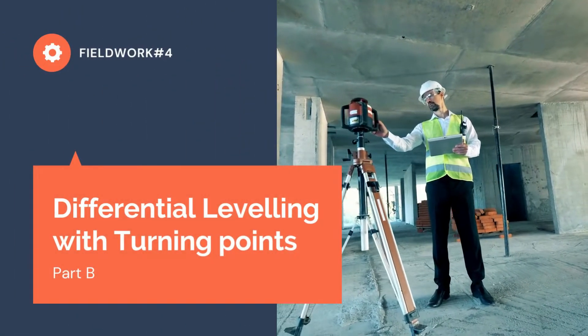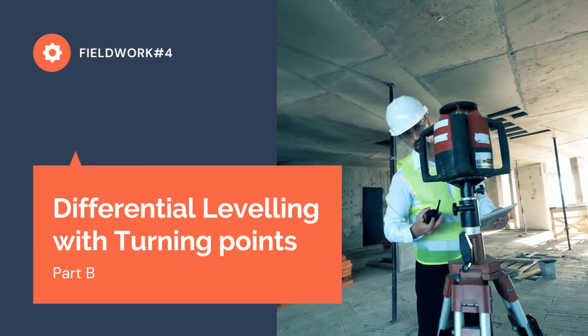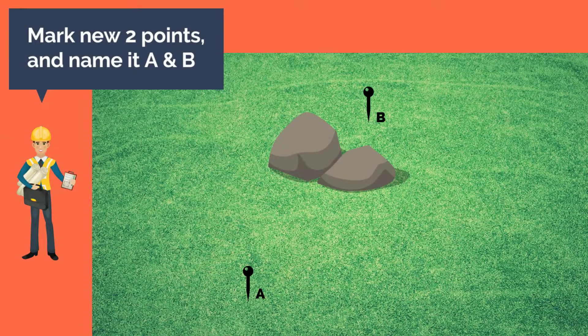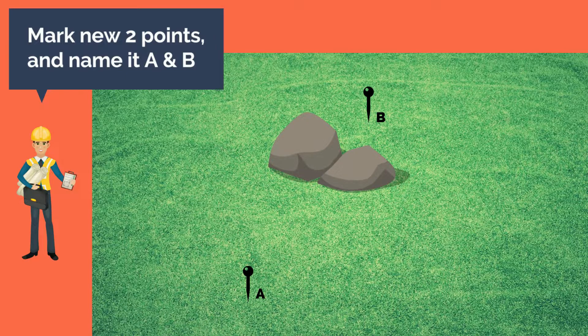Since we know now how to do the single setup differential leveling, let's move on to the differential leveling with turning points. First, the instructor will assign another location of 2 points different from the previous one marked as A and B.